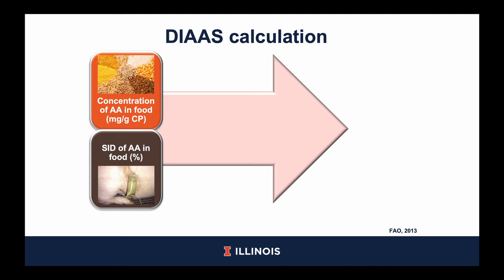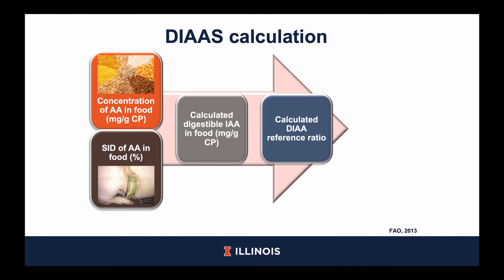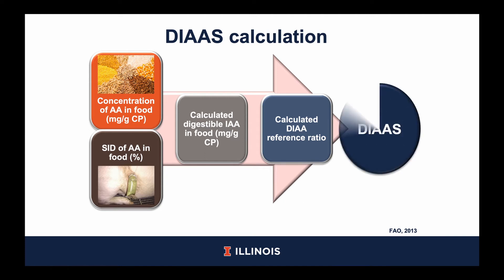The rest of the steps in determining DIAAS are simply calculations. Next, the concentration of amino acids in the test ingredient is divided by the SID of the same amino acid in the test ingredient, resulting in the concentration of digestible indispensable amino acids in the test ingredient. These concentrations are then divided by one of three reference scoring patterns, resulting in the calculated digestible indispensable amino acid reference ratio. The amino acid with the lowest ratio is what determines the DIAAS for that test ingredient.